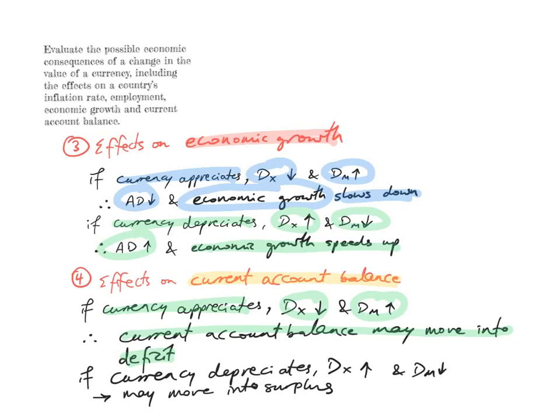And the opposite is true. If the currency depreciates, foreign demand for exports may rise, domestic demand for imports may fall, and the current account balance may, as a result, move into surplus.